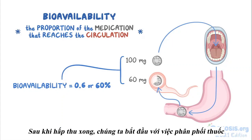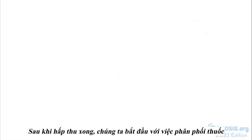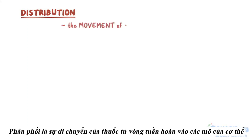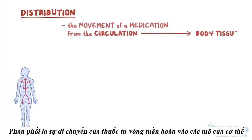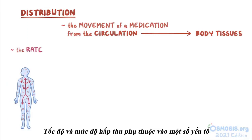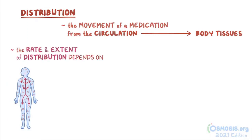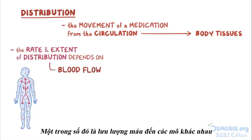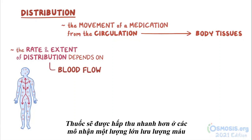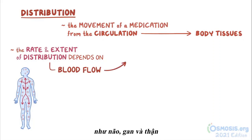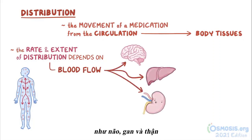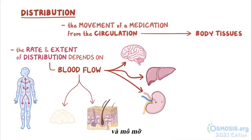Once absorption has been completed, we're ready for the distribution of the medication. Distribution is the movement of a medication from the circulation into the body tissues. The rate and extent of distribution depends on several factors. One of them is blood flow to different tissues — medications will be more rapidly distributed to tissues that receive large amounts of blood flow, like the brain, liver, and kidneys, and less to tissues with poor blood flow, like the skin and adipose tissue.